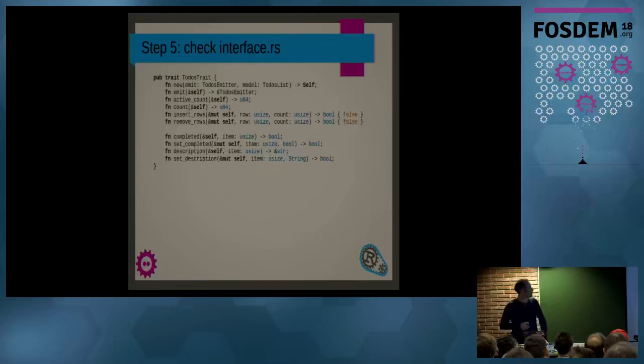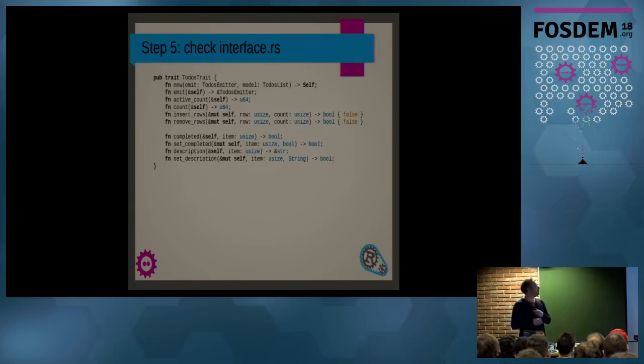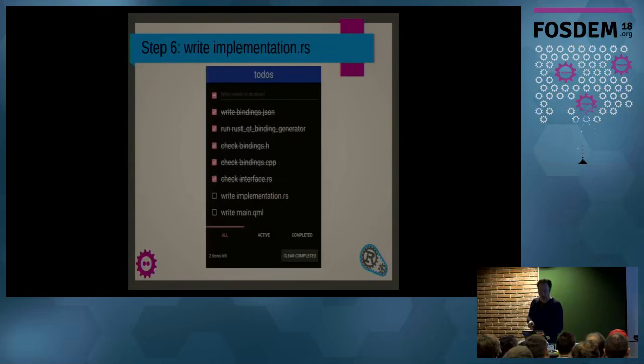But how does it look on the Rust side? Well, on the Rust side, we have a trait called the Todos trait. And it has a constructor, which you need to implement. And it has an emitter. The emitter is there so that you can emit signals when something has changed. So, you can signal to the user interface that something has changed. For example, some item was added to the list. There's functions for inserting rows. And here are the functions to get the value if number one, two, three or five is completed or not. And you can set it to be completed or you can get the description or set the description.